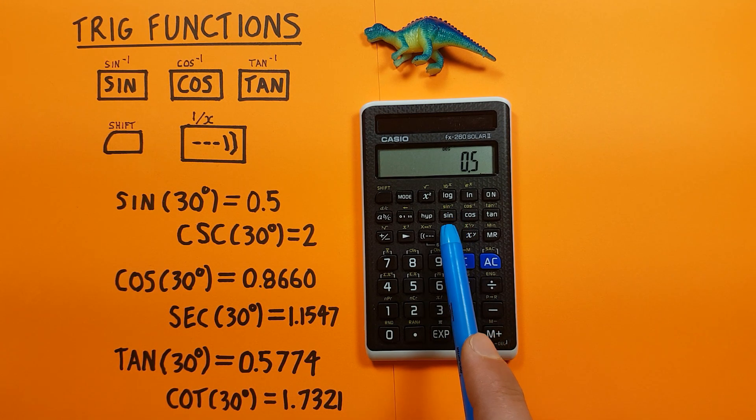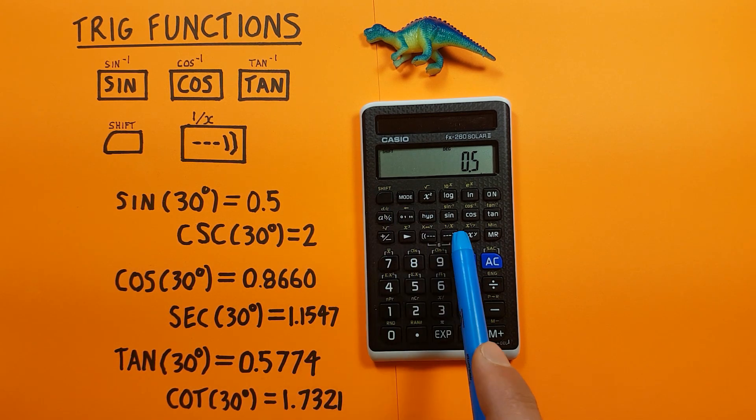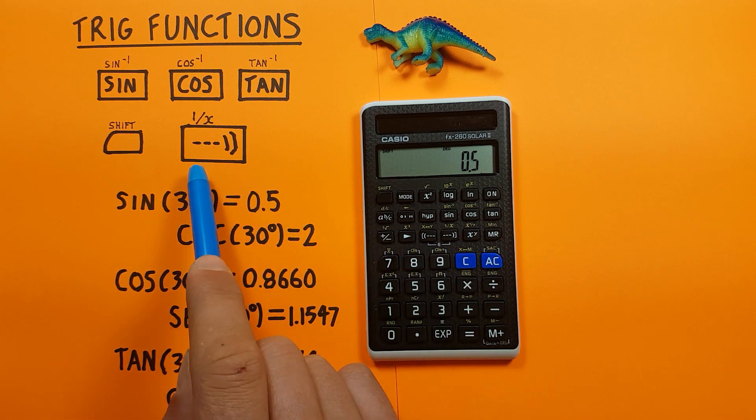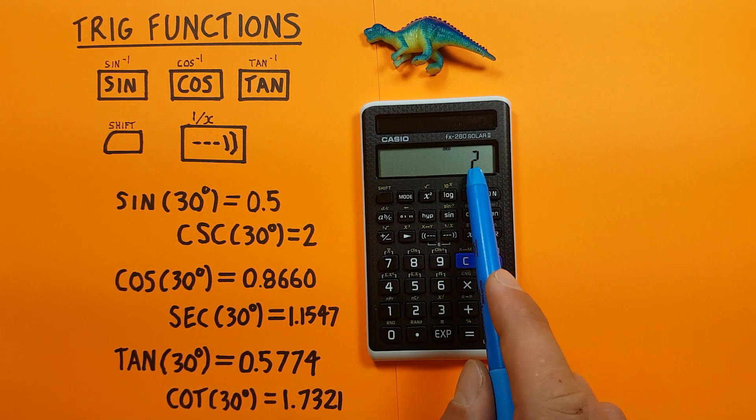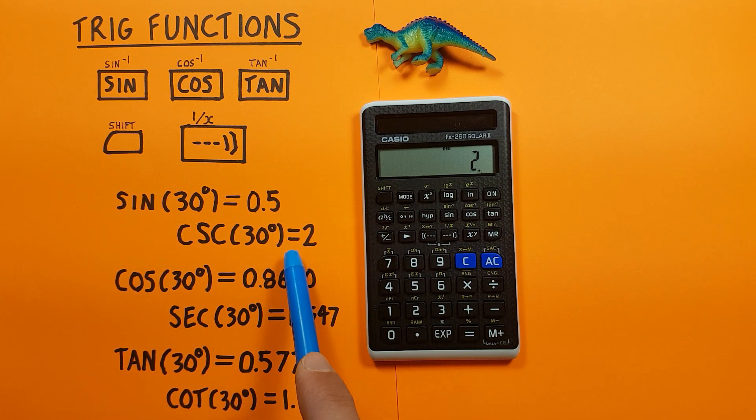30, sine. And then we inverse this number, so we press shift, right bracket with the x inverse key. There it looks like this, that's this one. And we get a result, so we see the cosecant of 30 degrees is equal to 2.